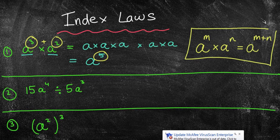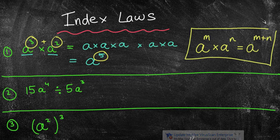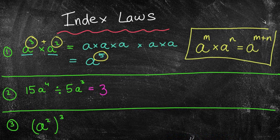The second question we have a division question. So first of all we can look at this and say, well 15 divided by 5, that's going to be 3. Now I've got a to the power of 4 divided by a to the power of 3. So what does this actually mean? Well I could rewrite this way.